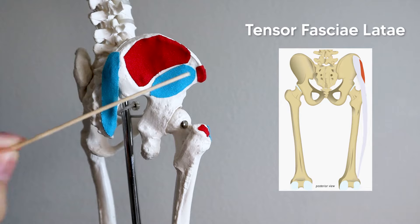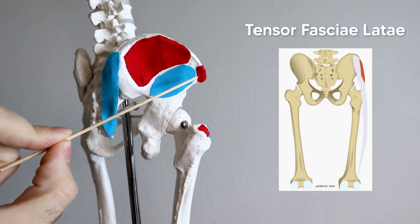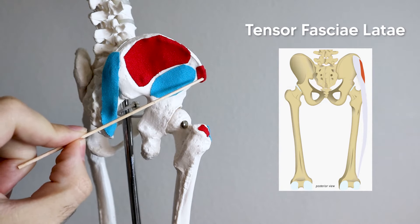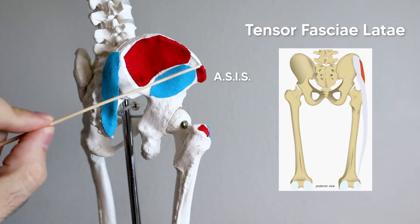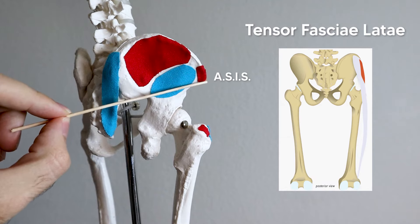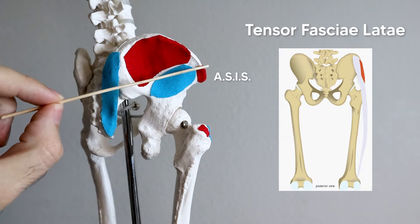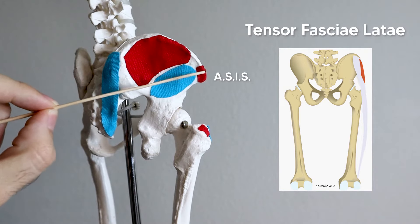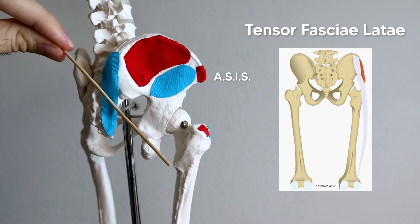Our last muscle is the tensor fasciae latae, or TFL. It doesn't have 'gluteus' in its name, but it is considered part of the gluteal group. The TFL originates off the lateral edge of the anterior superior iliac spine. The way I think about that is it's the most anterior muscle of this group, so it originates off the most anterior part of the ilium, which is the ASIS. This muscle then runs inferiorly and its tendon blends into the iliotibial band, in kind of the same way that the gluteus maximus does.